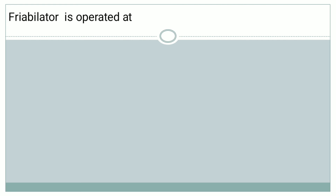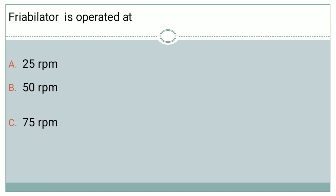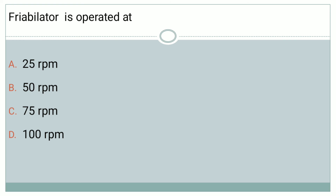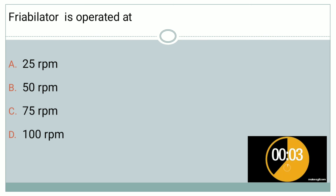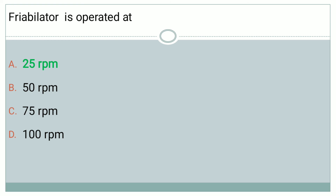The next question is: the friabilator is operated at what speed? Options are: A — 25 rpm, B — 50 rpm, C — 75 rpm, and D — 100 rpm. If you are thinking 100 rpm, your answer is wrong. The correct answer is 25 rpm — the friabilator is rotated at 25 rpm for 4 minutes, giving a total of 100 rotations.